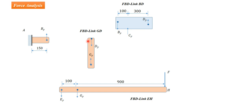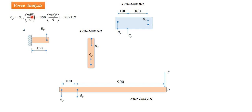After removing DX, BX, EX, and GX, we are left with fewer unknowns that can be solved using static equilibrium equations applied to each free body diagram. First, let us find CY. CY equals the ultimate shear strength multiplied by the cross-sectional area of the bar: SUS × (π/4 × d²). This gives the maximum load at which the bar will shear — CY = 9897 N.